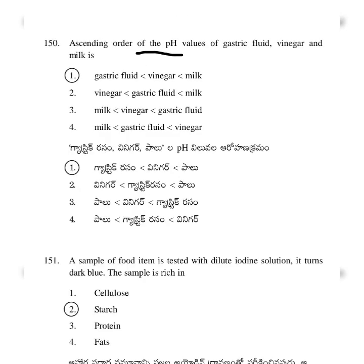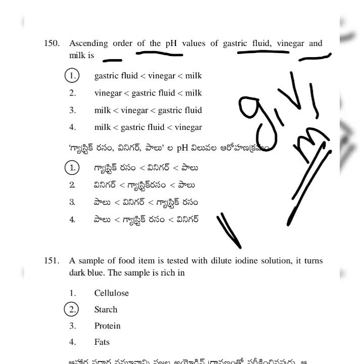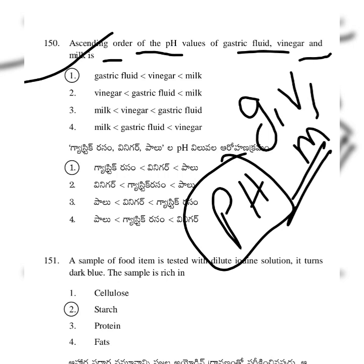According to the ascending order of the pH values of gastric fluid, vinegar, and milk — option 1: gastric fluid is less than vinegar, which is less than milk. Milk has the highest pH value, next is vinegar, next is gastric fluid. pH values have already been covered; see the link in the description.